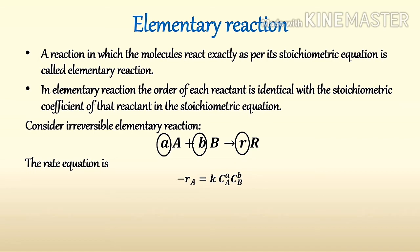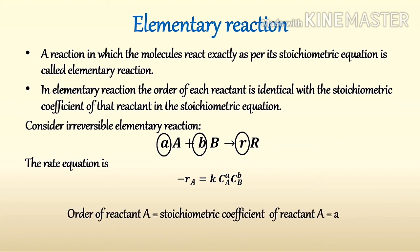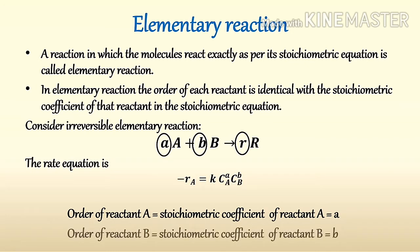Since the above equation is the rate equation of the elementary reaction, the order of reactant A equals the stoichiometric coefficient of reactant A, which is a, and the order of reactant B equals the stoichiometric coefficient of reactant B, which is b.